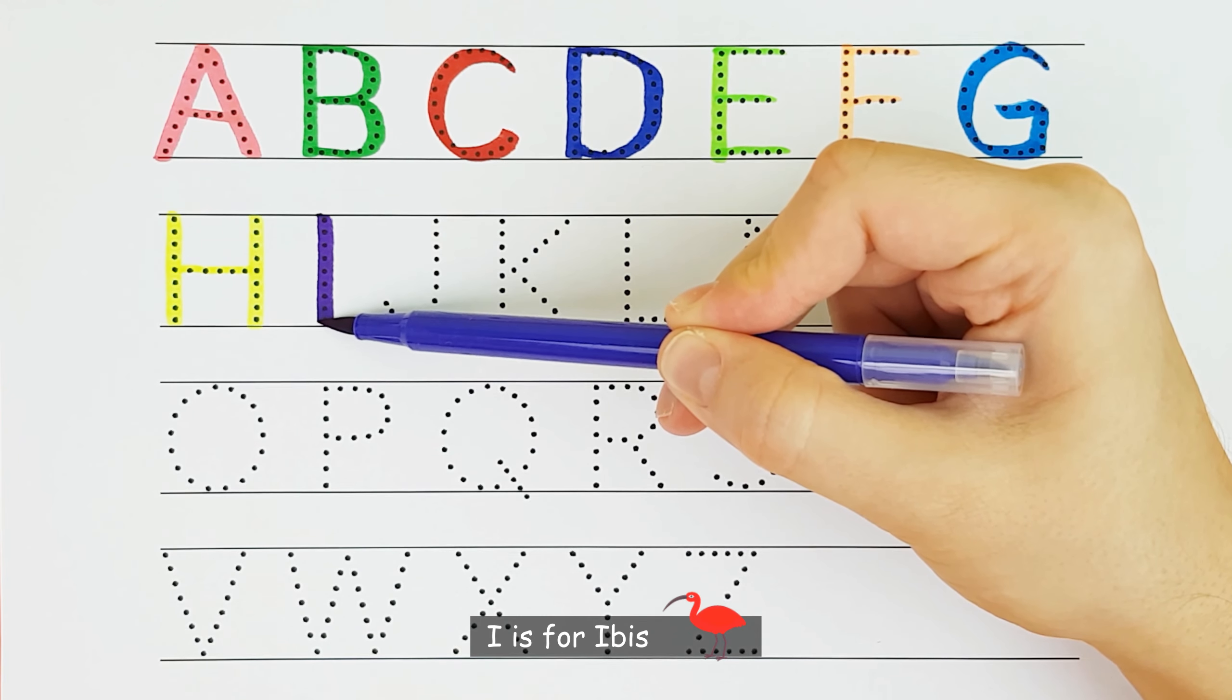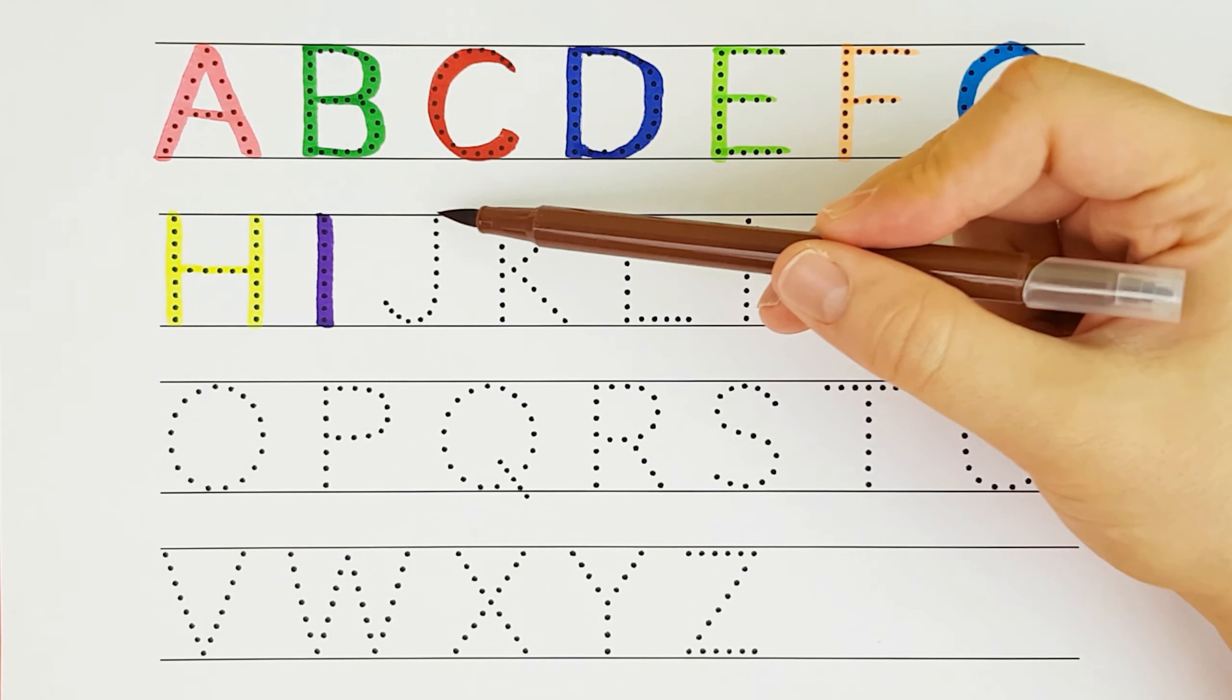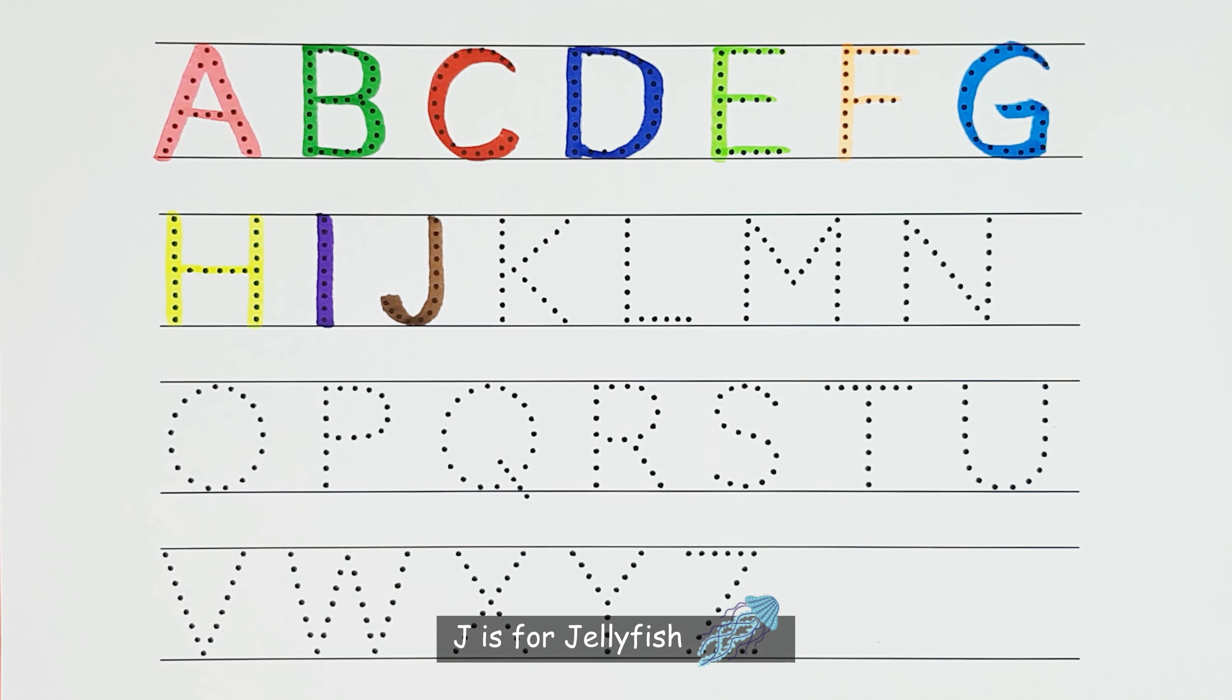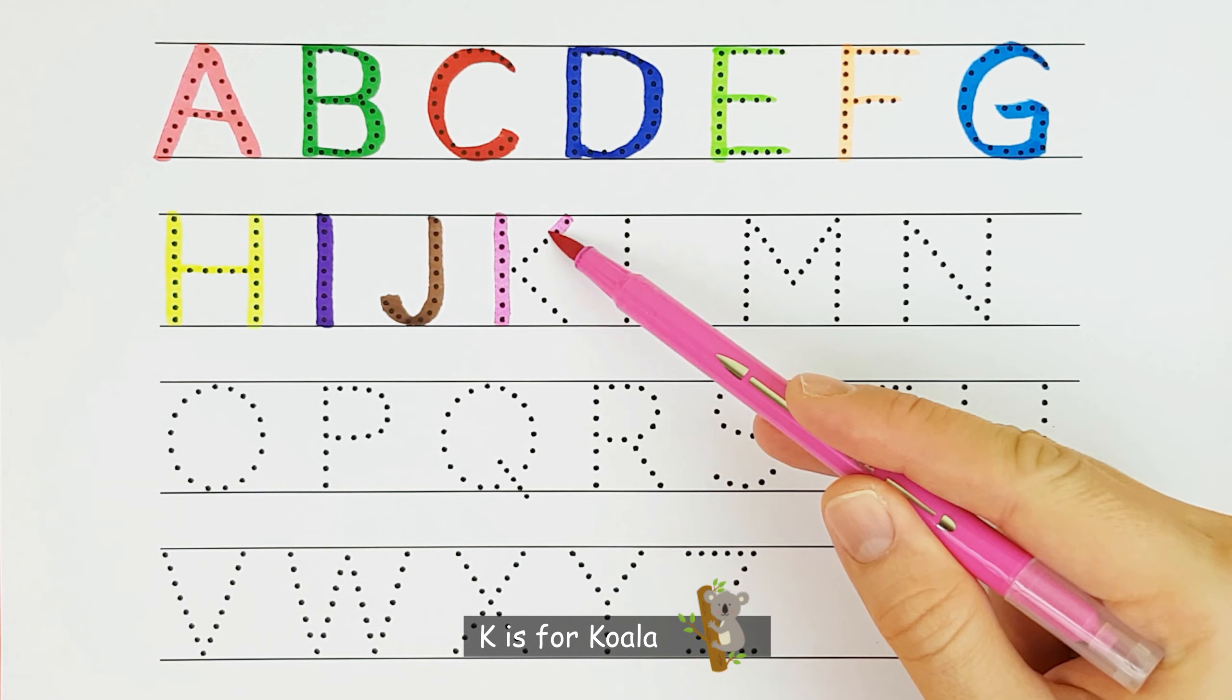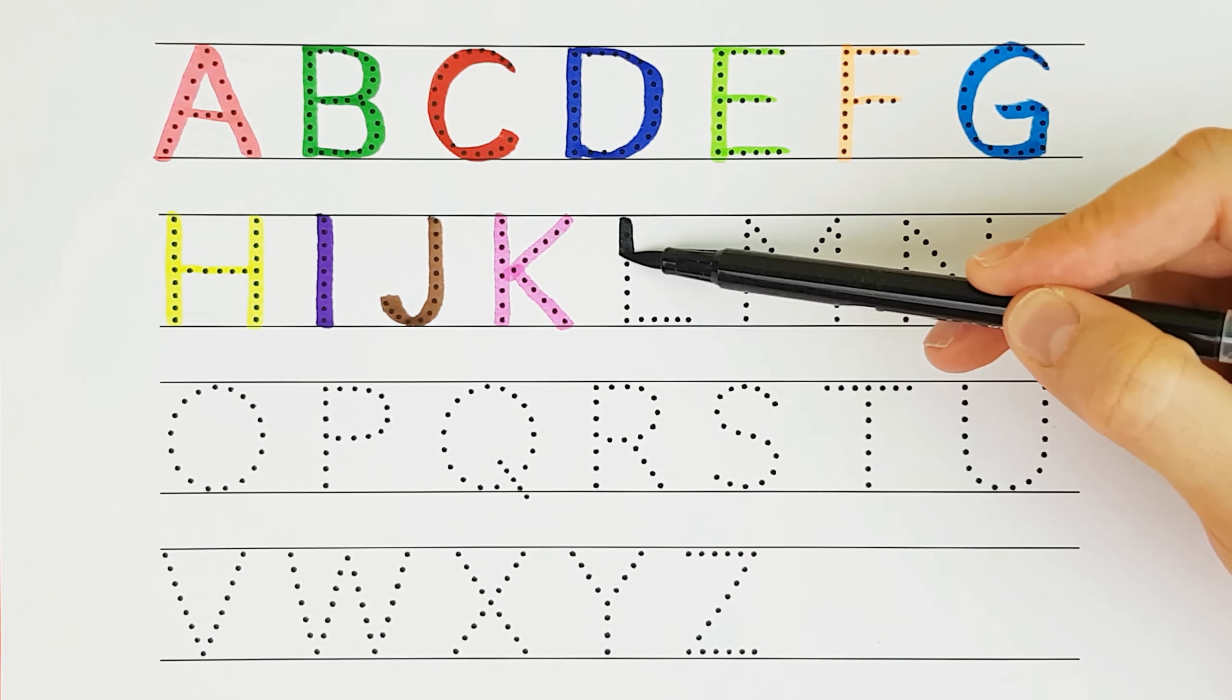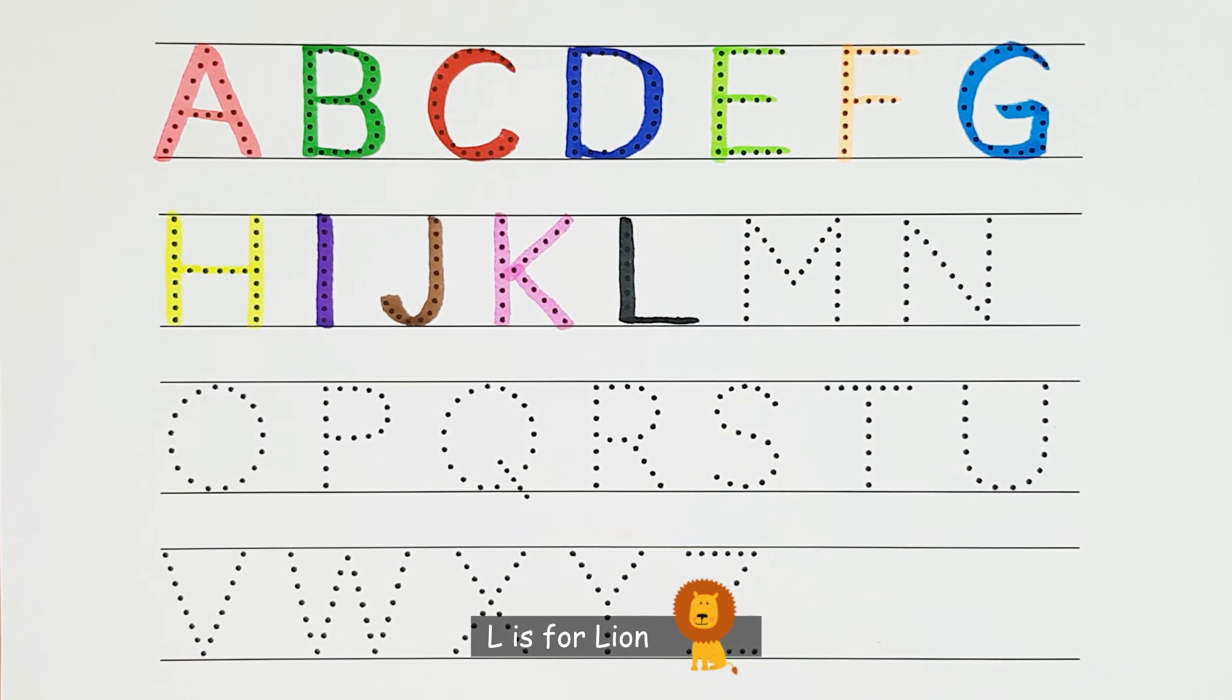I. I is for Ibis. I. J. J is for Jellyfish. J. K. K is for Koala. K. L. L is for Lion. L.